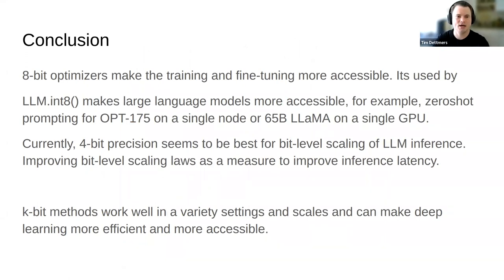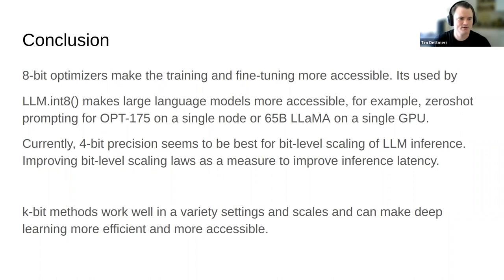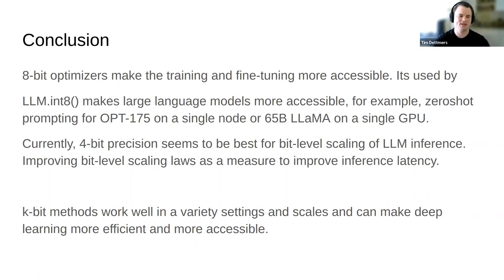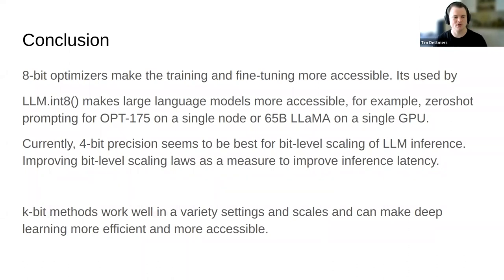That's what I have for this talk. I covered 8-bit optimizers, which make training and fine-tuning more accessible and are integrated in the bitsandbytes library with over 20,000 pip installs per day. Then LLM.int8(), which makes it possible to run large models on a single machine — OPT 175 billion on a single server, or LLaMA 65 billion on a single desktop. And finally, k-bit inference scaling laws showing 4-bit is the optimal precision — if you want to optimize inference latency or memory footprint, always go for 4-bit.